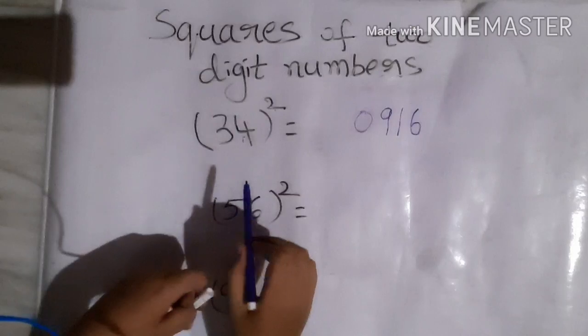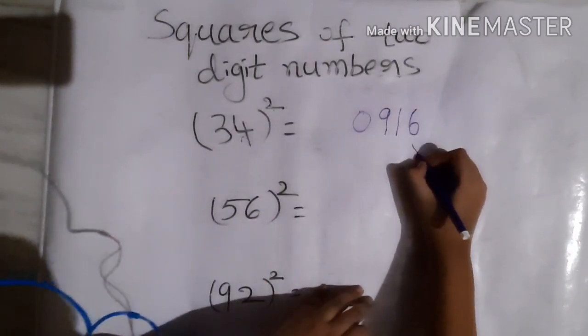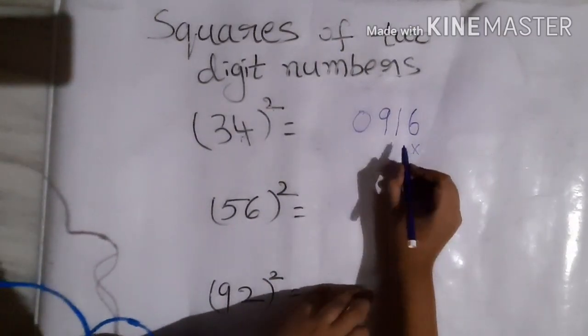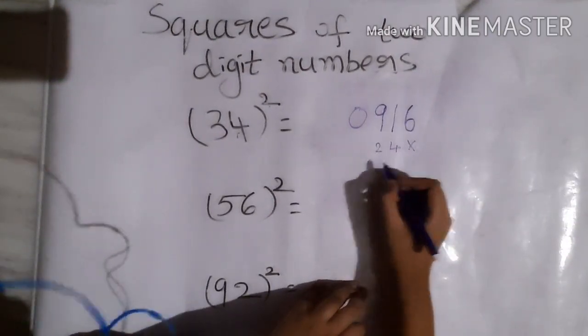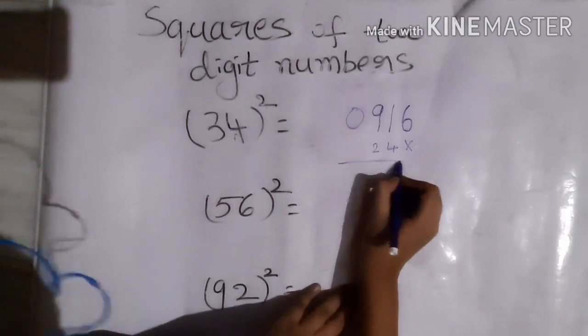Leave the ones place, in the tens place put 4, and in the hundreds place put 2. Now add it.